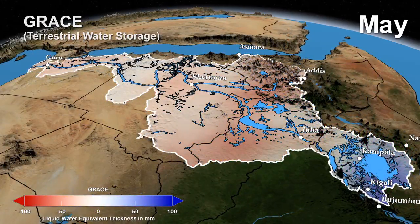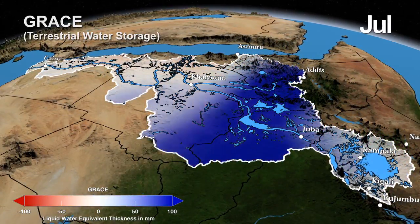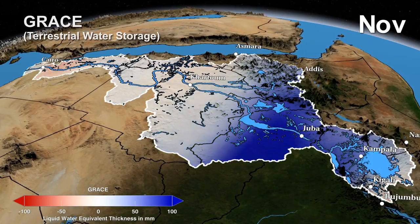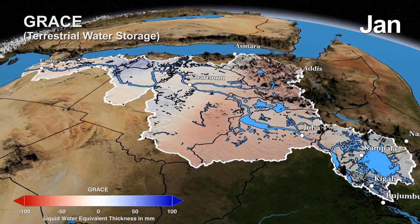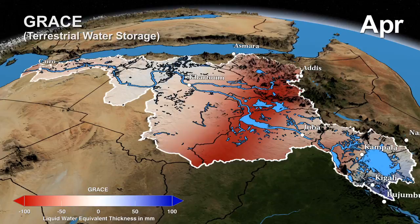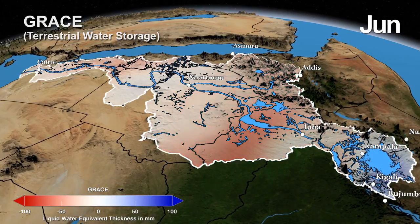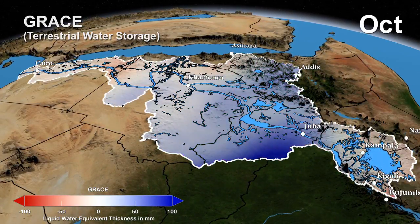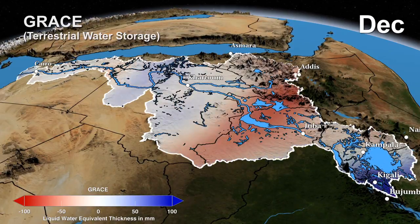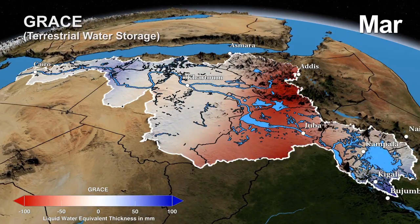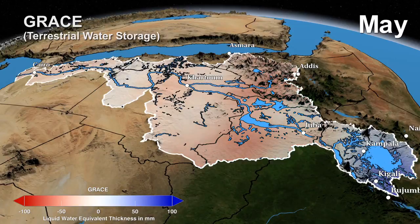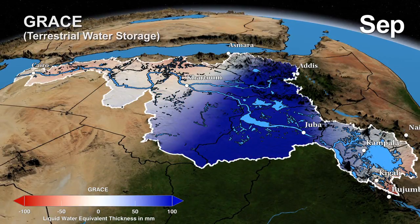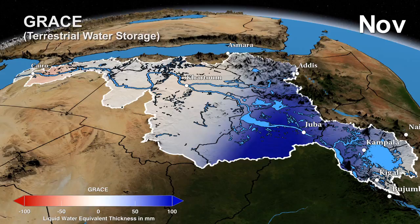NASA satellites use gravity to monitor the total water present in the system, including surface water, soil moisture, and groundwater. The annual cycle estimates of water storage anomalies clearly show the seasonal movement of water storage due to precipitation patterns and the movement of surface waters from headwaters regions into the wetlands of South Sudan and the reservoirs of the Lower Nile Basin.